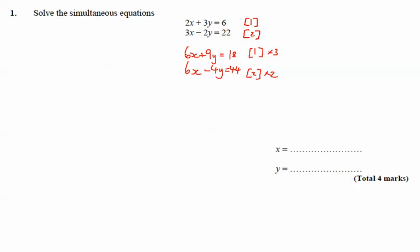I'm then going to subtract one away from the other. So 6x minus 6x gives me 0, 9y minus minus 4y is going to give me 13y, and then 18 minus 44 is going to give me minus 26.